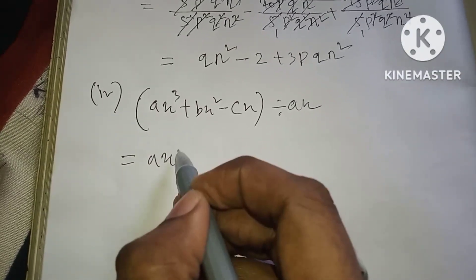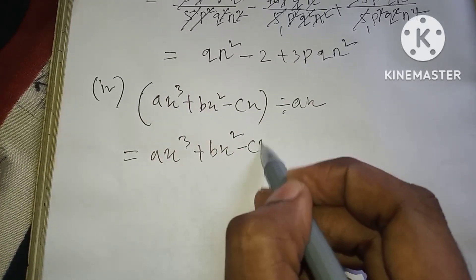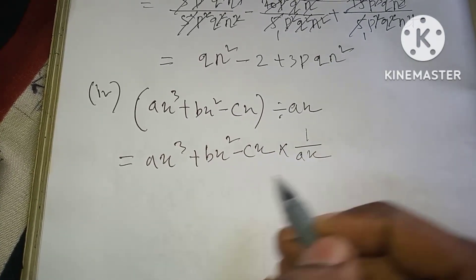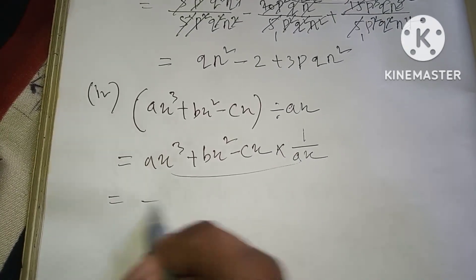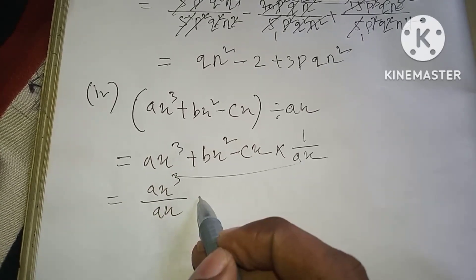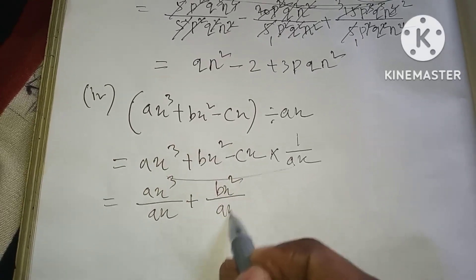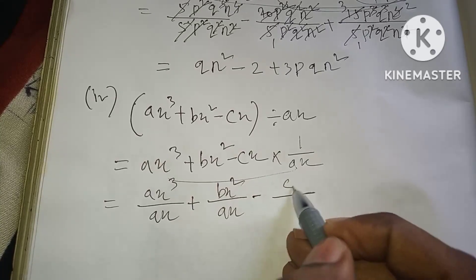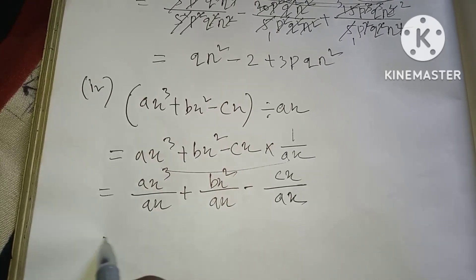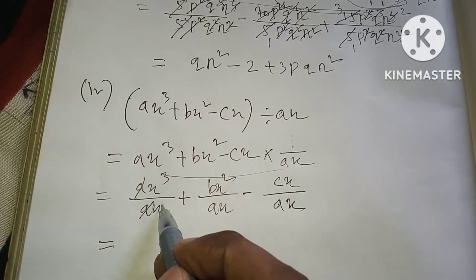A x to the power 3 plus B x to the power 2 minus C x, into 1 by Ax. Distribute: A x to the power 3 into 1 by Ax gives x squared, B x squared into 1 by Ax gives B by A times x, minus C x into 1 by Ax gives minus C by A.